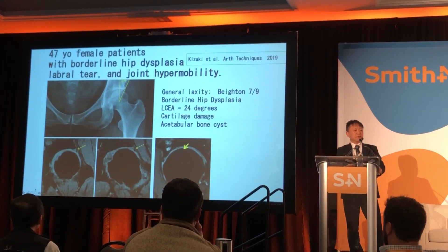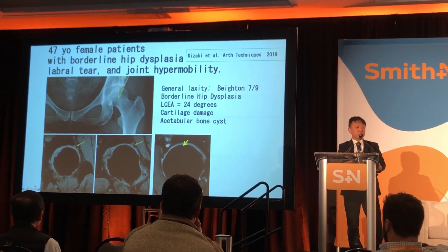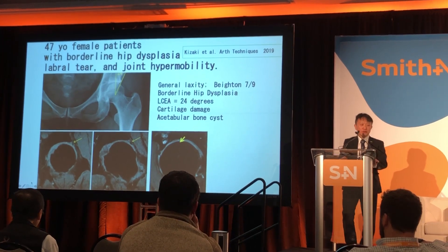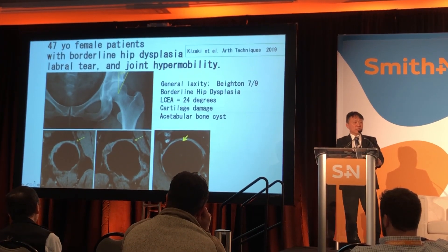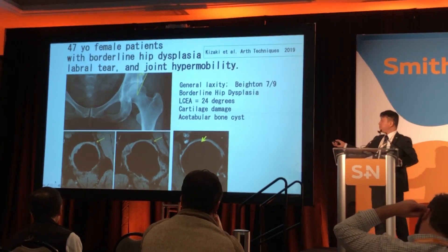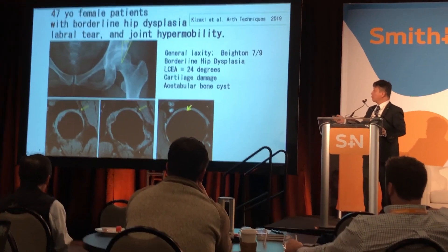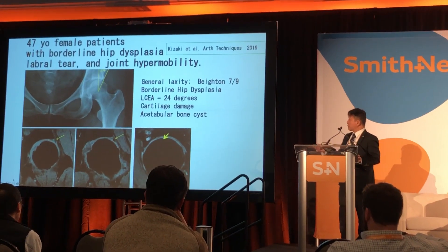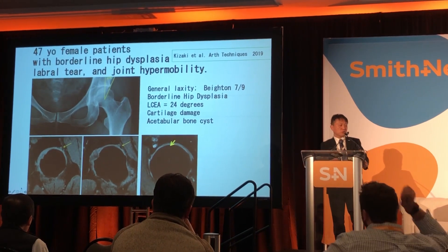This is a 47-year-old female patient with borderline dysplasia, labral tears, and joint hypermobility. The Beighton score is 7 points and the lateral center edge angle is 24 degrees. MRI shows extensive labral tears and cartilage damage associated with acetabular bony edema patterns. This is not a straightforward indication for hip arthroscopy.